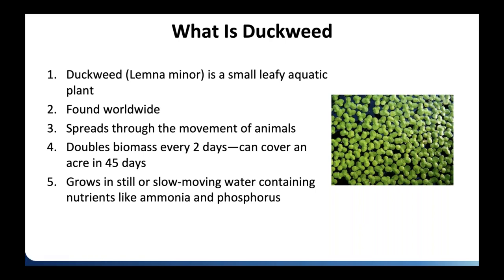Duckweed is also on the list of lagoon pests. It's not algae — people often confuse it — but a leafy aquatic plant found worldwide that spreads through animal movement (ducks carry it between ponds). It proliferates quickly: it can double its biomass in two days and cover an entire acre within 45 days. It thrives in slow-moving quiescent water with lots of nitrogen and phosphorus nutrients.